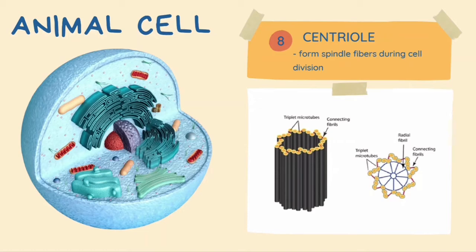Another component inside the animal cell is centrioles — small cylindrical components that exist within pairs. They are made up of a complex arrangement of microtubules and do not exist inside plant cells. The function of centrioles is to form spindle fibers during cell division.